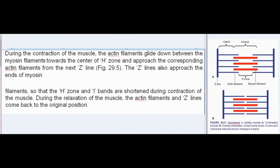During the contraction of the muscle, the actin filaments glide down between the myosin filaments towards the center of H-zone and approach the corresponding actin filaments from the next Z-line. The Z-lines also approach the ends of myosin filaments, so that the H-zone and I-bands are shortened during contraction of the muscle. During the relaxation of the muscle, the actin filaments and Z-lines come back to the original position.